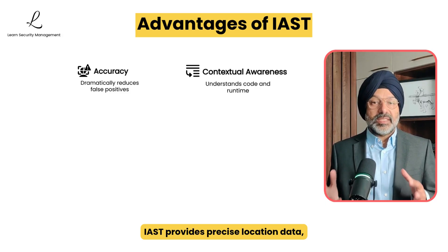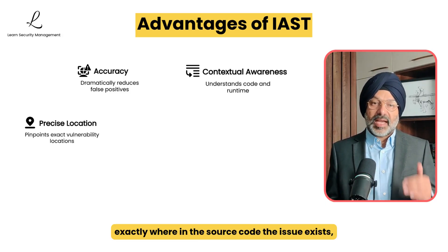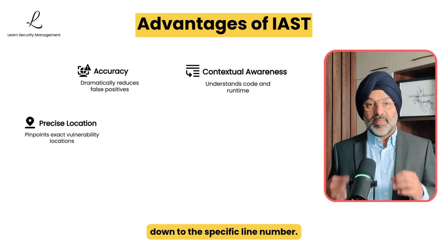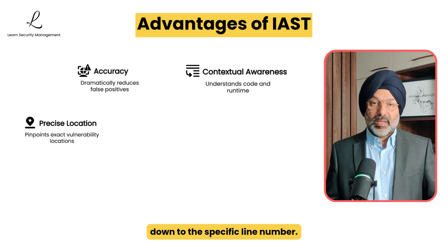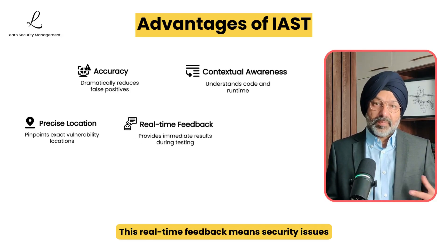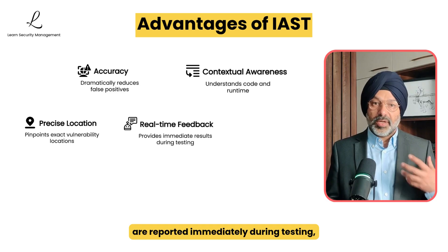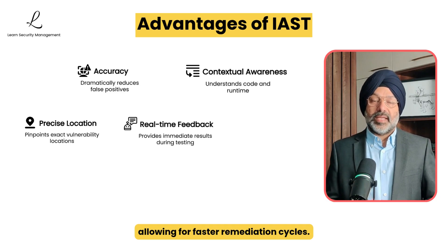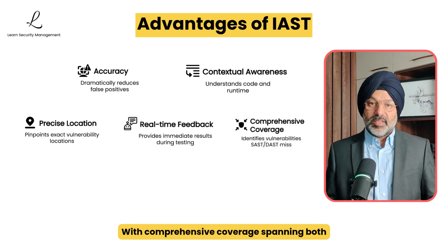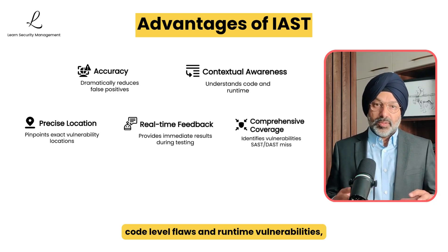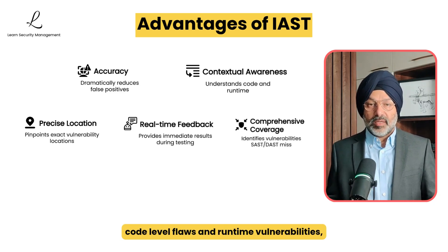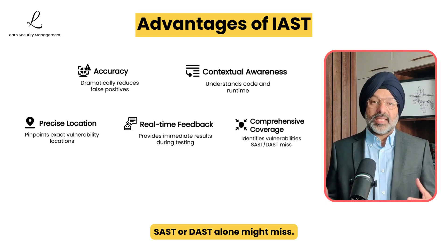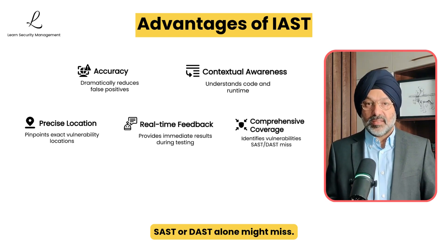When vulnerabilities are discovered, IAST provides precise location data, pinpointing exactly where in the source code the issue exists, down to the specific line number. This real-time feedback means security issues are reported immediately during testing, allowing for faster remediation cycles. With comprehensive coverage spanning both code-level flaws and runtime vulnerabilities, IAST identifies issues that either SAST or DAST alone might miss.